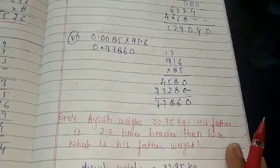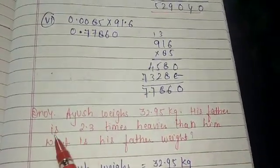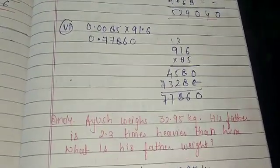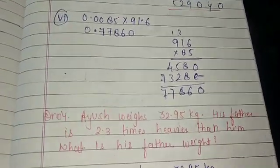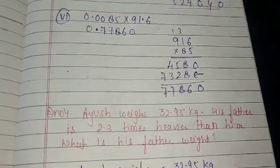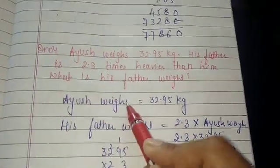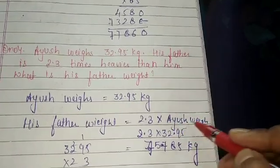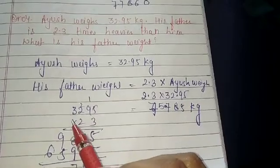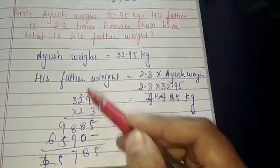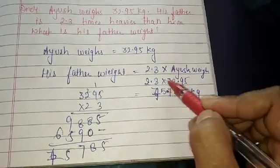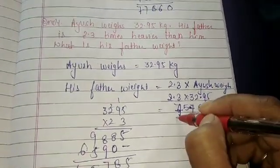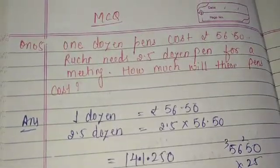Question 4 — Word problem: Ayush's weight is 32.95 kg. His father is 2.3 times heavier than him. What is his father's weight? Father's weight = 2.3 times Ayush's weight = 2.3 into 32.95. We multiply 2295 by 23, get the result, then count 3 decimal digits and place the point. Answer: 75.785 kg.